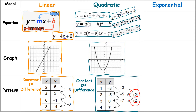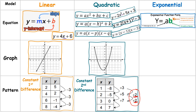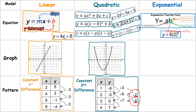For exponential functions the form is y equals a times b to the x power. Sometimes you won't see the a, but a is the y-intercept; b is the growth or decay factor, also called the common ratio; and x is your exponent. An example: y equals 6 times 2 to the x, where 6 is the y-intercept and 2 is the common ratio.